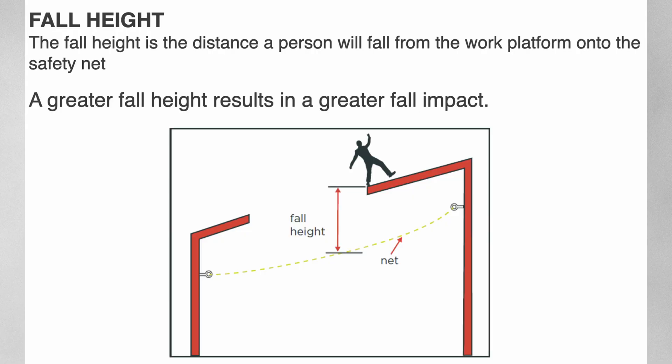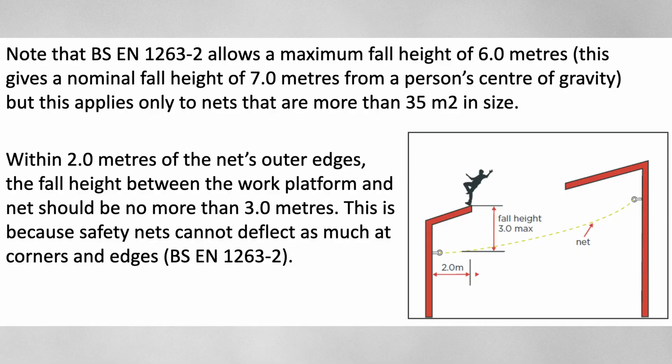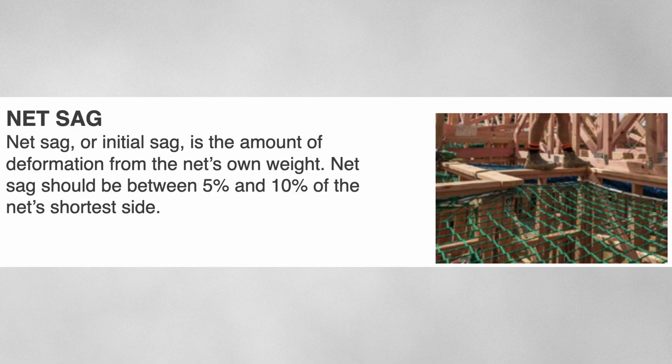If the fall height is more than 2 meters, the safety net must be greater than 35 square meters including length and width, have a shortest side of at least 5 meters, and have a maximum fixing spacing of 2.5 meters. The full height is the distance a person will fall from the work platform onto the safety net — a greater fall height results in greater fall impact. Keep the full height as low as possible by installing the safety net as close as practicably possible below the work platform. BS EN 1263 Part 2 allows a maximum full height of 6 meters, but this applies only to nets more than 35 square meters in size.